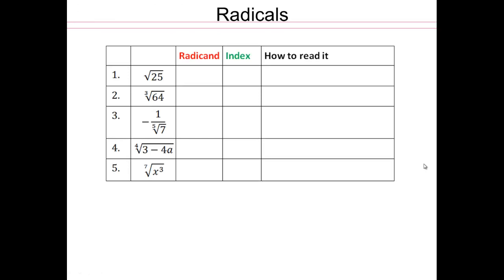All right. So go ahead and give us the radicand, index, and how to read it. How you would read it out loud. Write it in words here, please. So 25 is the radicand. When there is no number here, that means index is 2. And you would read that as square root of 25. So go ahead and do that for all of them. Pause the video here, do the problems, and then check. See if you got them all. If you got them all correct, then that's great.